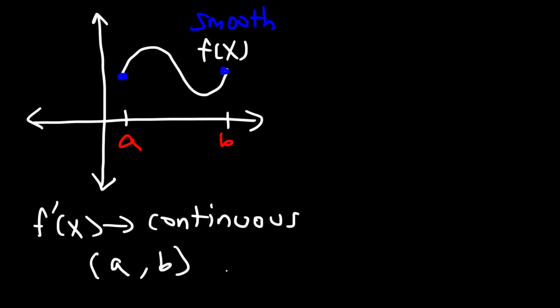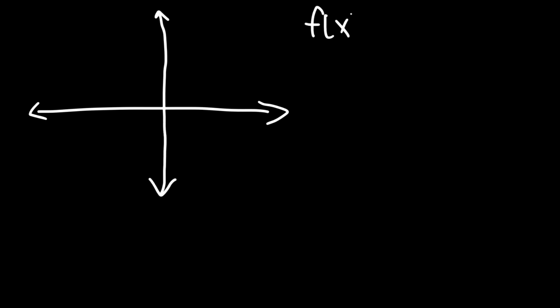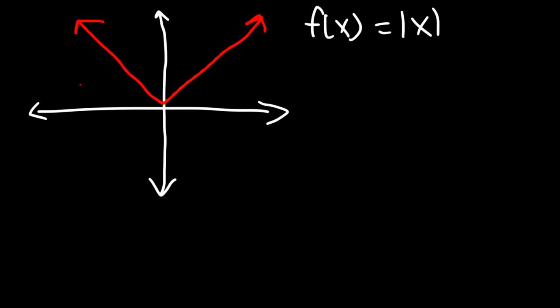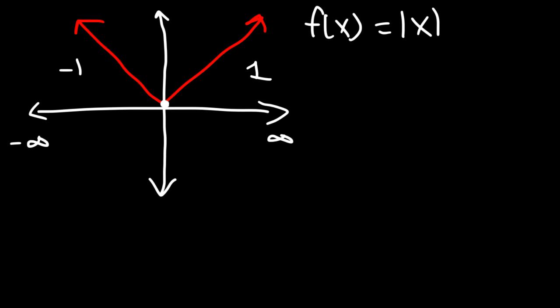Now let's focus on the absolute value of x. The graph is basically the shape of a V. Notice that this function is continuous — we don't have any holes, jump discontinuities, or infinite discontinuities — so f of x is continuous everywhere from negative infinity to infinity. But is it differentiable? Notice that we have a sharp turn at x equals 0. The slope changes instantly from negative one to one, so there is no defined slope at that point. That means it's not differentiable at x equals 0.